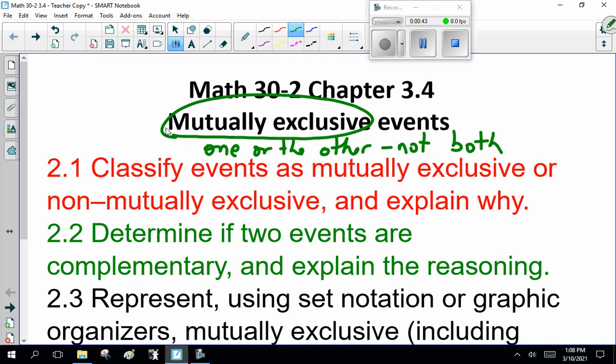Our outcomes today: one, classifying events as mutually exclusive or not mutually exclusive, and explaining why. Two, determine that two events are complementary, that is, the opposite of each other, and explain the reasoning.